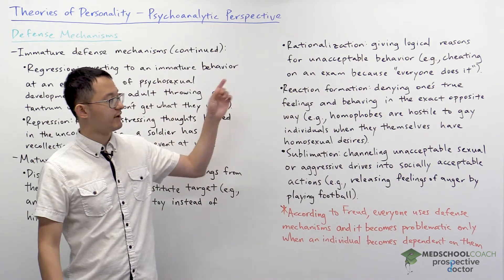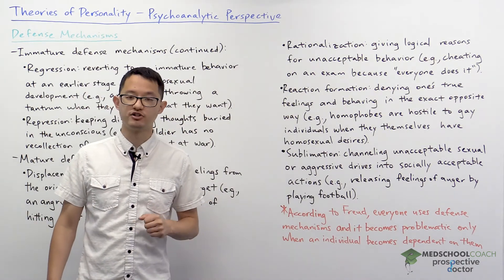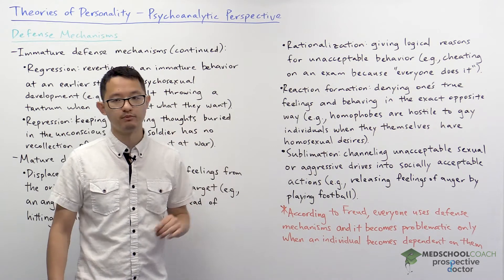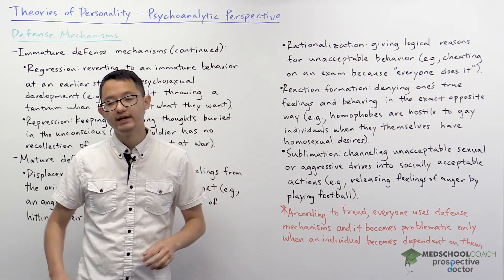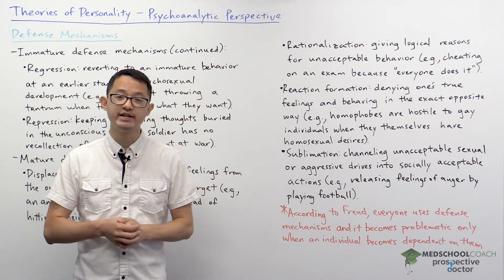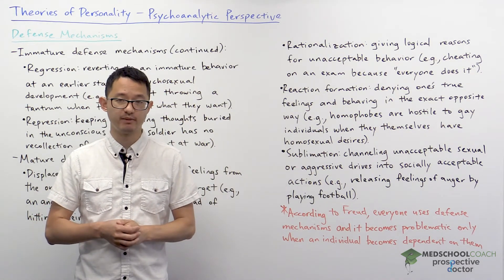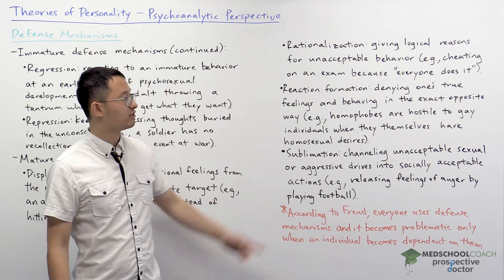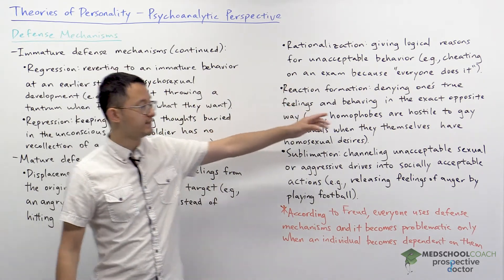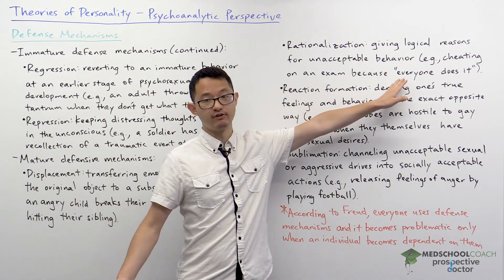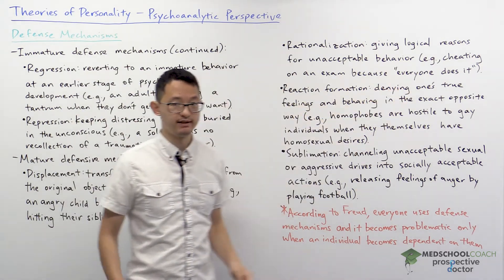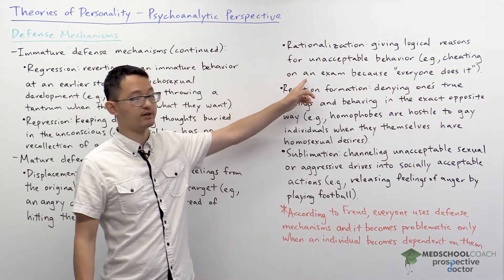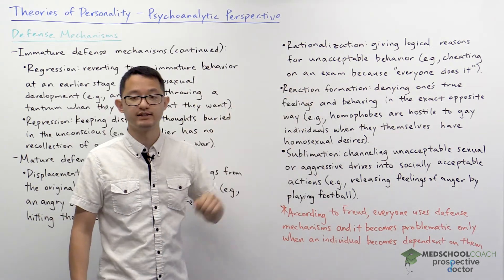Next we have rationalization. This is giving logical reasons for unacceptable behavior. An example would be a student cheating on an exam because everyone does it. Their logical reason that everyone does it allows them to justify the unacceptable behavior of cheating on the exam.